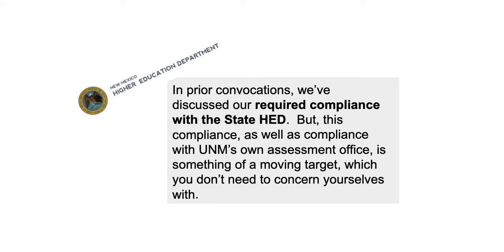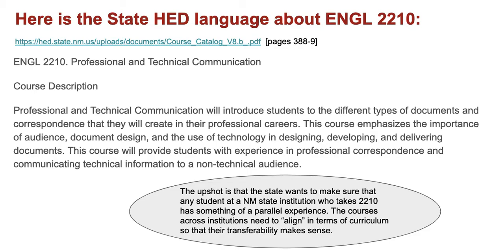I've talked in prior convocations about how our outcomes align with the state higher education department's required outcomes for the technical writing class. The objective is that our core curriculum technical writing class outcomes have to align with the outcomes of the same class across all state universities, so that if a student takes technical writing at New Mexico State, Highlands, or UNM, they all have to be transferable across institutions.